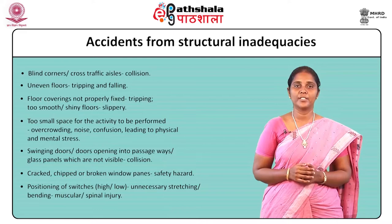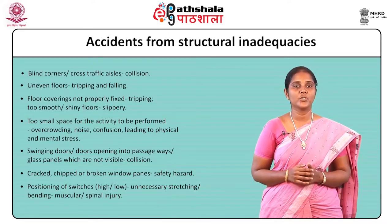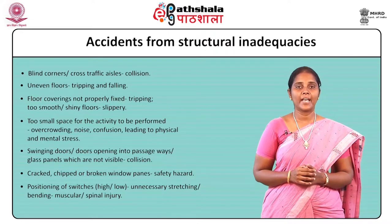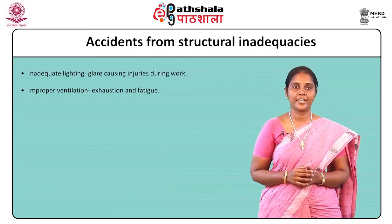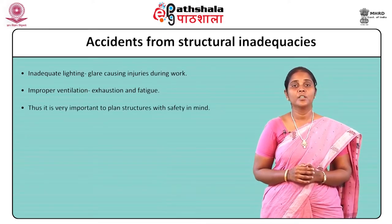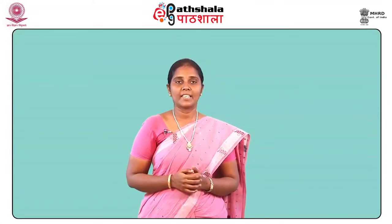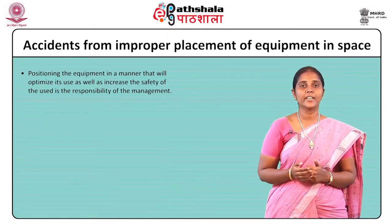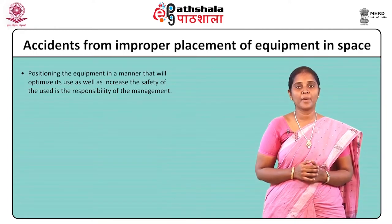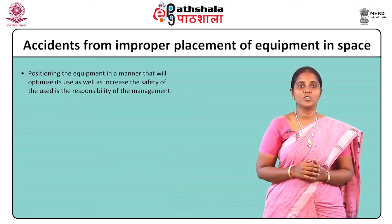Positioning of switches either too high or too low leads to unnecessary stretching or bending, causing muscular or spinal injuries. Injuries due to glare caused by inadequate lighting, and improper ventilation, may cause exhaustion and fatigue. Thus, it is very important to plan the structures of the establishment with safety in mind. The second cause is accidents from improper placement of equipment in space. Positioning equipment to optimize its use as well as increase the safety of personnel is the responsibility of management. Very often, attention to placement is neglected and equipment is installed where it fits best.